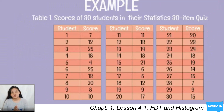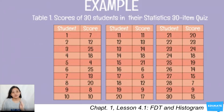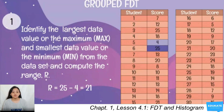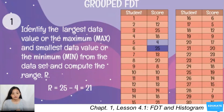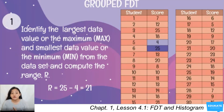Here is an example using the scores of 30 students in a statistics 30-item quiz. Note that this table is still in ungrouped form. The first column represents the student number and the second column represents each student's score. The first step is to identify the largest data value, or the maximum — in our table, the maximum score is 25. Next, identify the smallest value, or the minimum — the minimum score is 4.